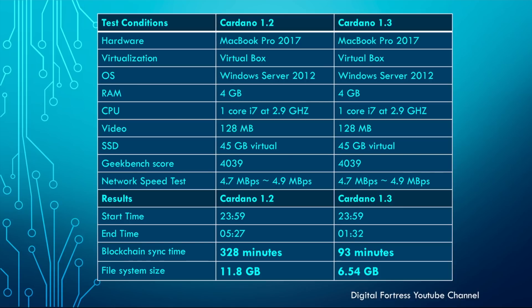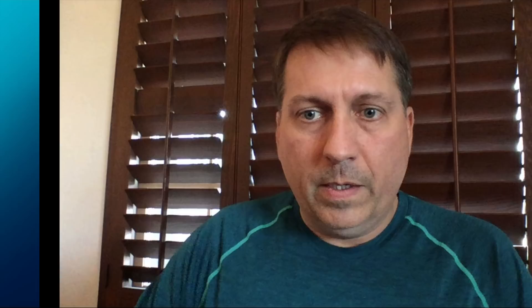So it's at least 3.5 times faster and possibly more. Also good news on the file system size: Cardano 1.2 was 11.8 gigabytes, Cardano 1.3 was 6.54 gigabytes — so nearly half the size. I was glad to see I could run both virtual machines on this laptop. I had run Ethereum Mist before — just one copy natively on the MacBook Pro — and had to remove it because it was using too much power and causing the laptop to overheat, and I had to switch to MetaMask for Ethereum. So it was good to see that Daedalus could run in such a constrained environment.